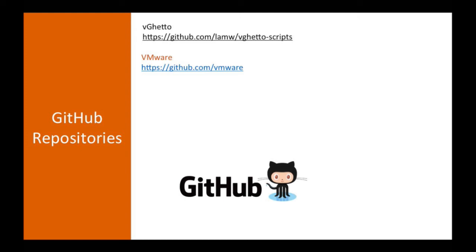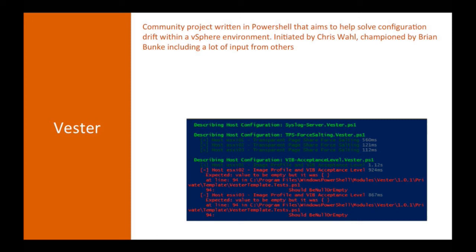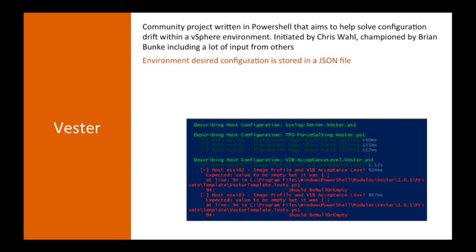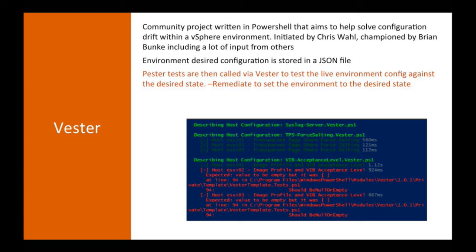Vesta is a community project written in PowerShell. The aim of Vesta is to help solve configuration drift within your vSphere environment. It was initiated by Chris Wall — he gave a talk on it at VMworld last year to get things kicked off — and it's now championed by Brian Bunke with a lot of community input. The way it works is you define your environment configuration in a JSON file. You can also run Vesta against your environment and it will pull out the current configuration for you, so you don't need to fill out the JSON file from scratch.